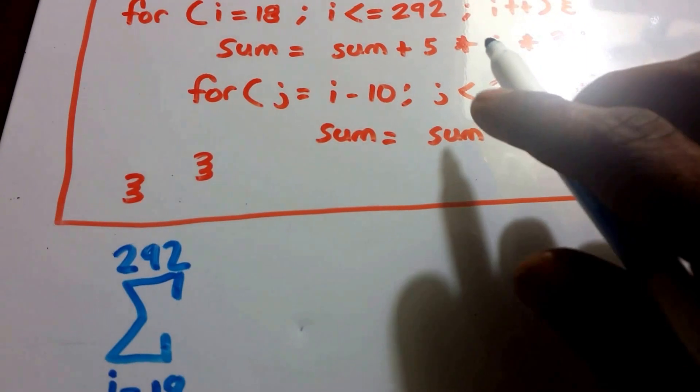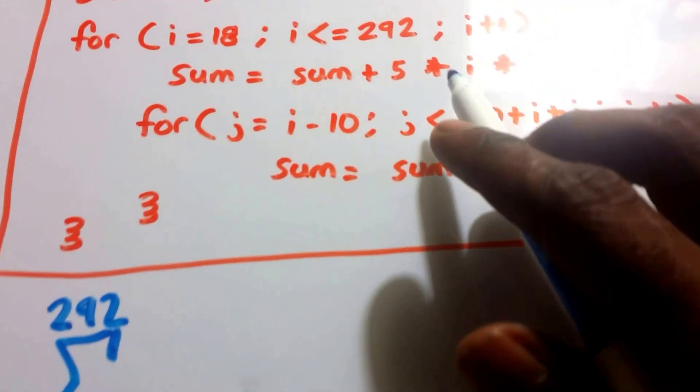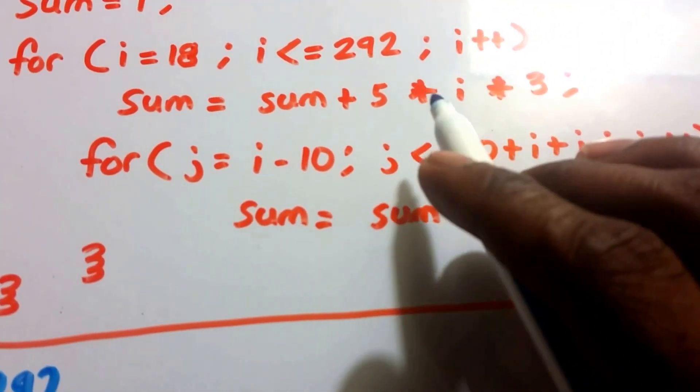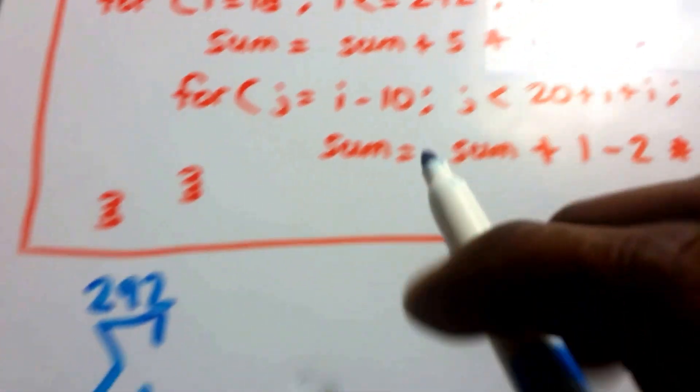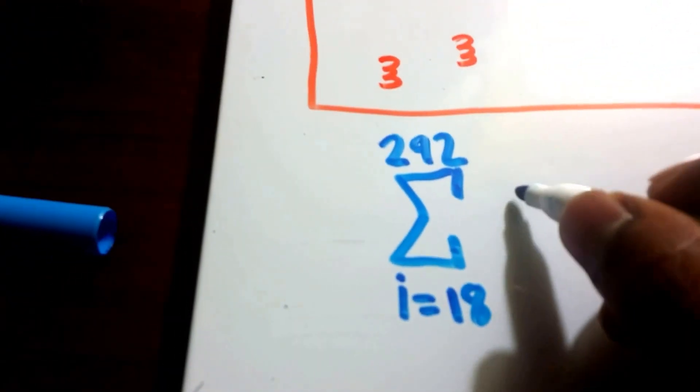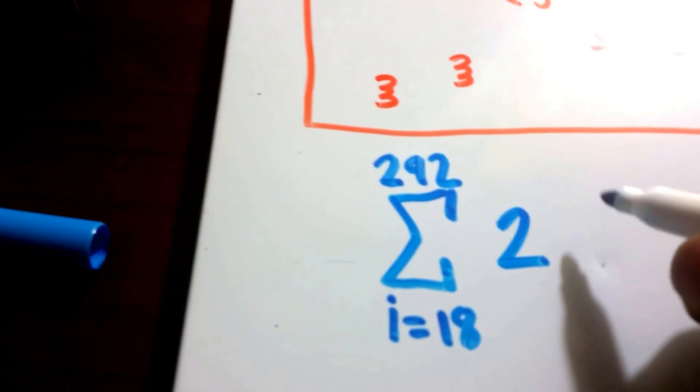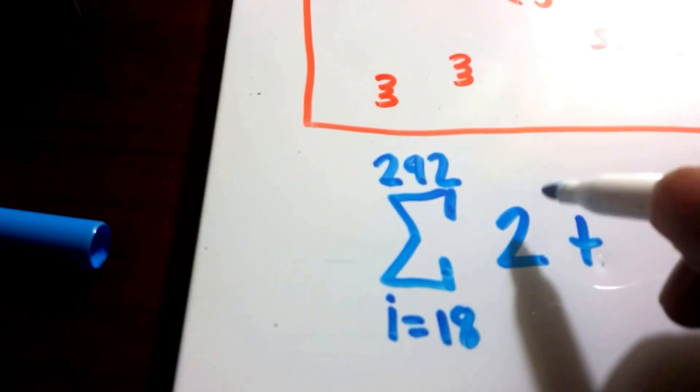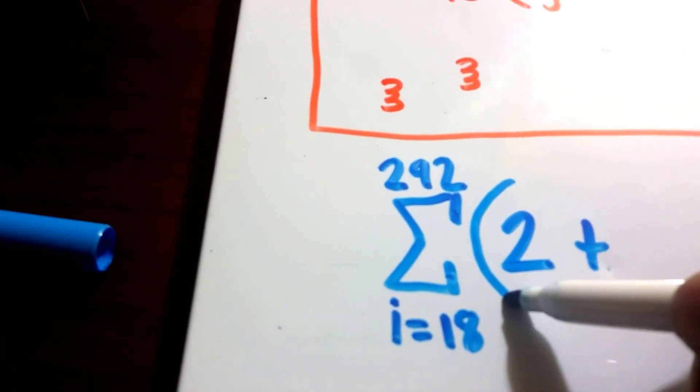And now in here we see that we have two multiplications, so yeah, two multiplication operations here and here. So we're going to put a 2 here, plus, well all this is going to be inside of that first loop.